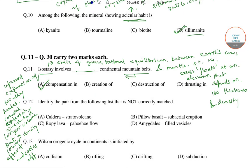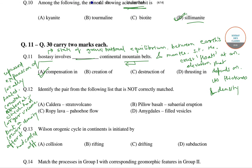Next we are moving to the next question: identify the pair from the following list that is not correctly matched. We have four combinations or four pairs and we have to find which of them is not correctly matched. The first one is caldera and stratovolcano.